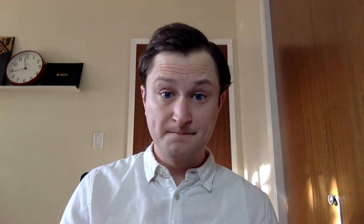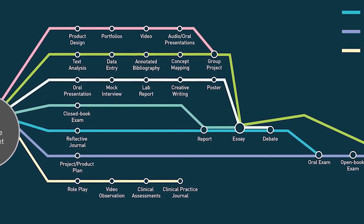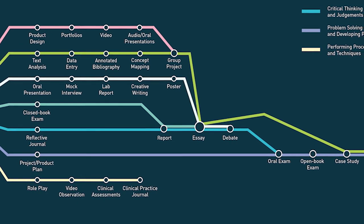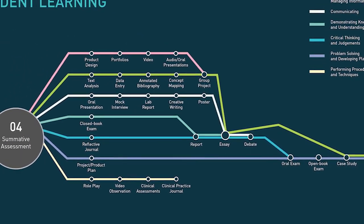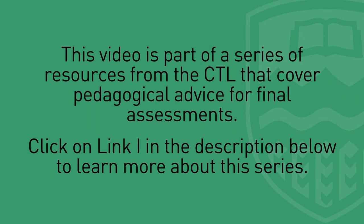There are certainly more options for your final assessment than what we just discussed. Click on Link H in the description for a link to an infographic that covers even more assessment methods as alternatives to a traditional closed book final exam. Think of each point on these lines as stations on a track — you don't have to stop at every station, but you can if you want to. You can choose to use one or several of these assessments relative to which learning dimension you would like to be assessing. Thanks for watching. Click on Link I below in the description to learn more about this series of CTL resources covering pedagogical advice for final assessments.